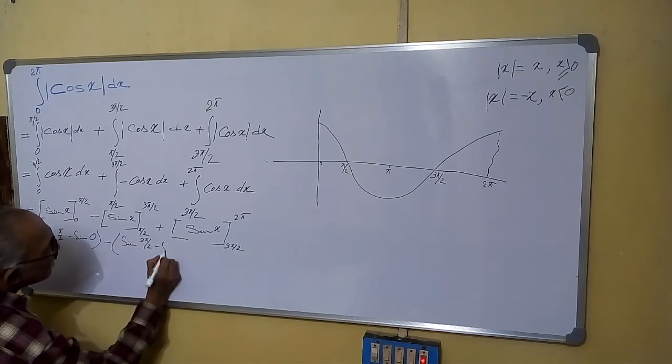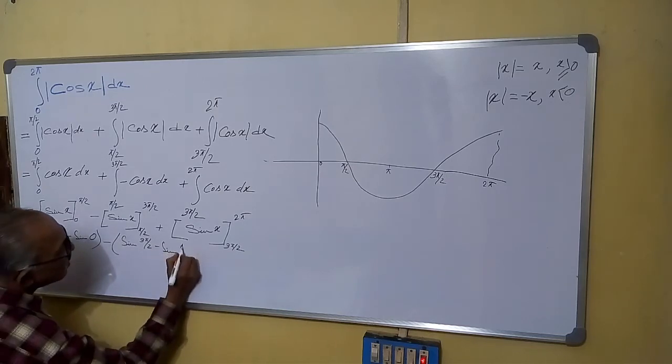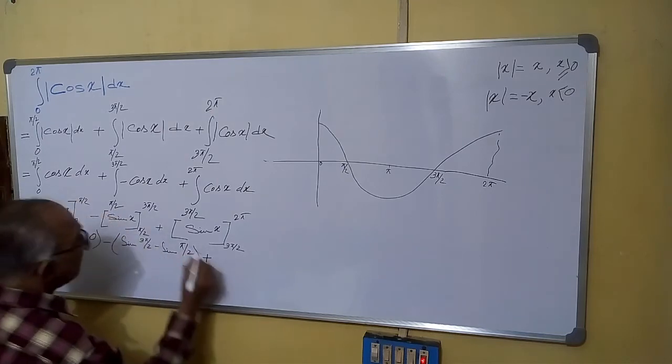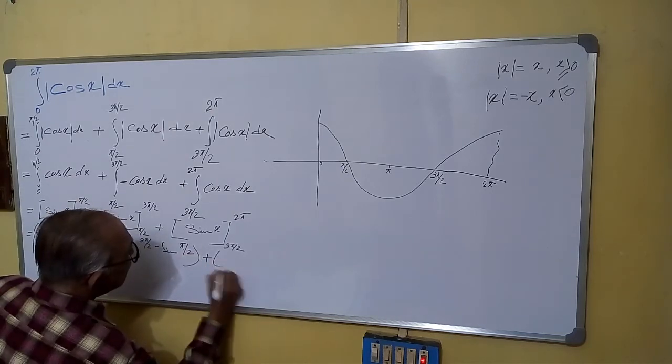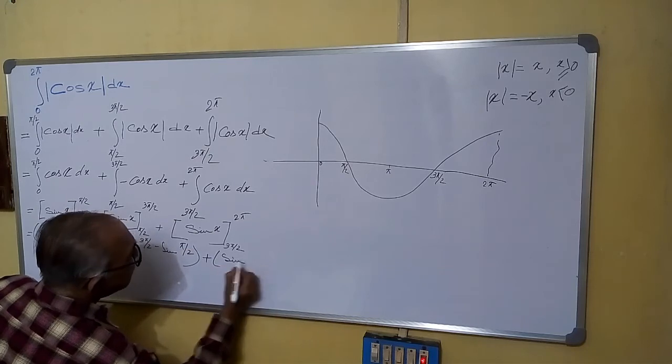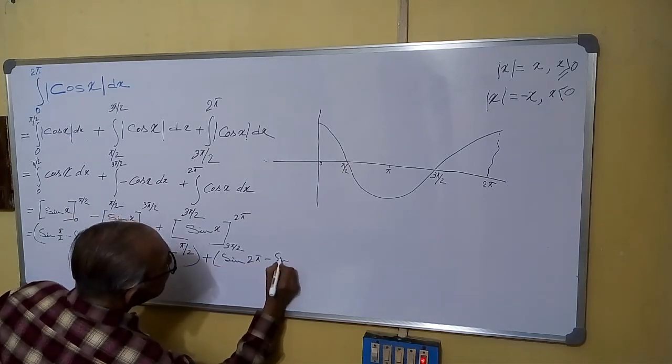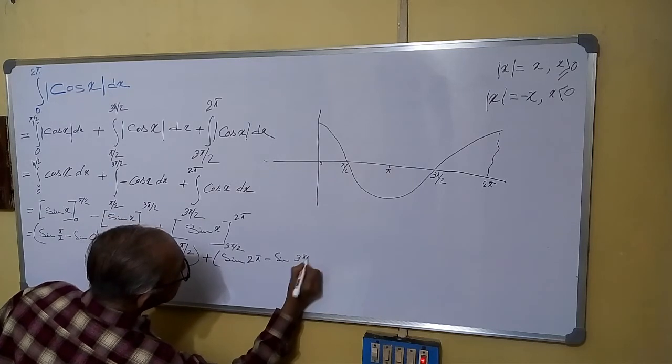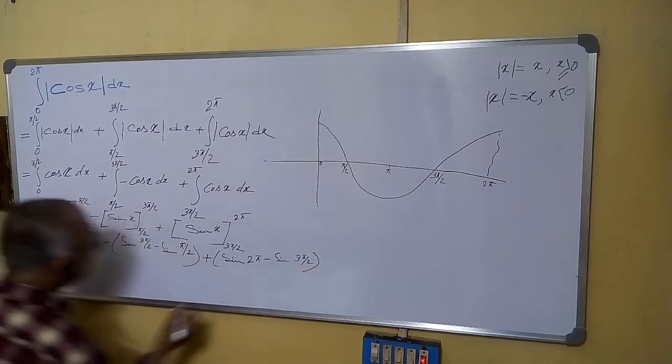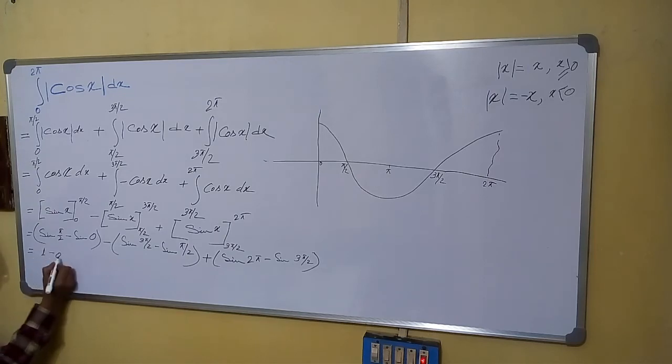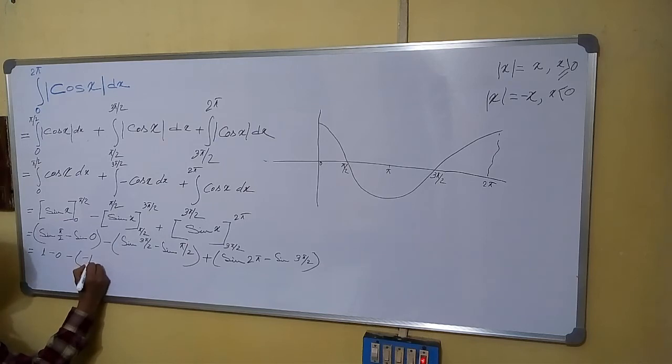Sine 2 pi minus sine 3 pi by 2. Sine pi by 2 is 1 minus 0 minus sine 3 pi by 2 is minus 1, minus sine pi by 2 is 1.